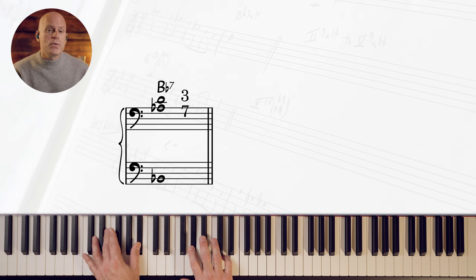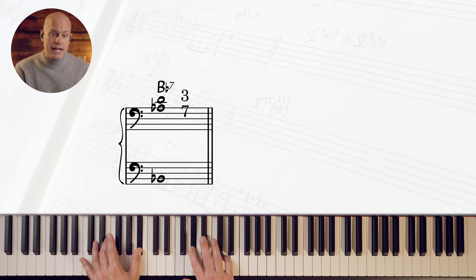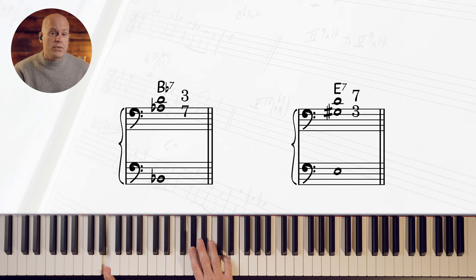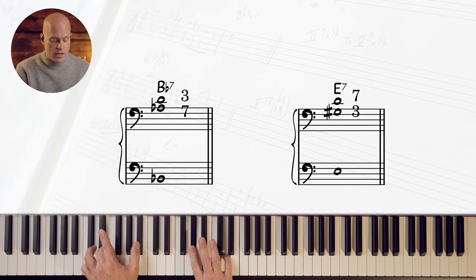If we play a root note a tritone away, we get E. Well, those two notes on top are also the third and seventh of E. It's a G sharp and a D.